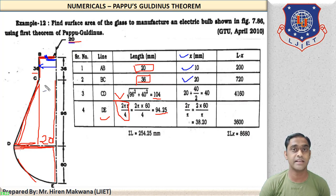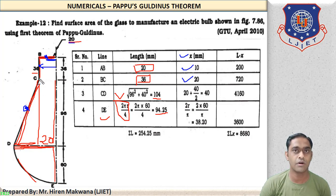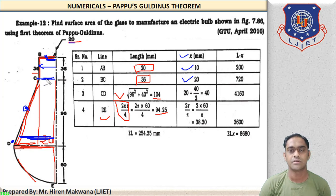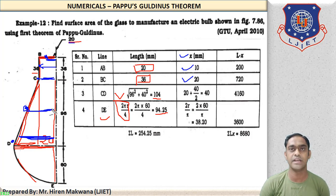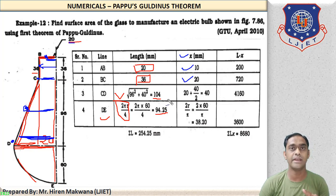For inclined line CD, using the shortcut method: CG is at the midpoint. Point C is at distance 20 and point D is at distance 60 from the Y-axis. So X₃ = (20 + 60)/2 = 40 mm.